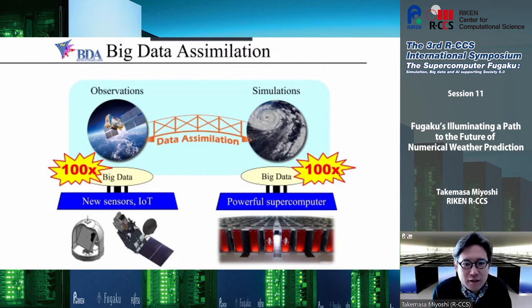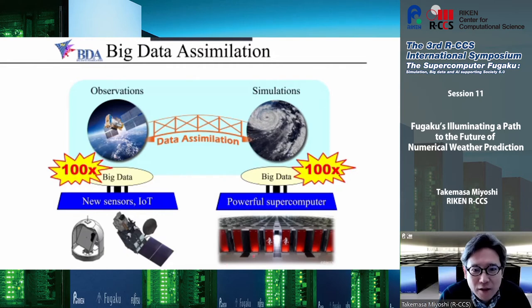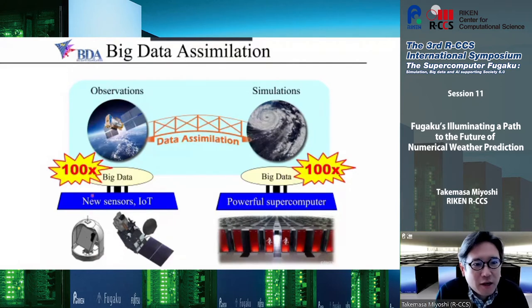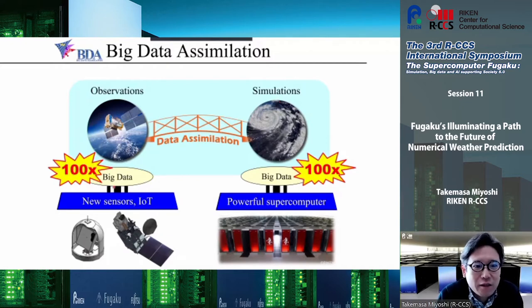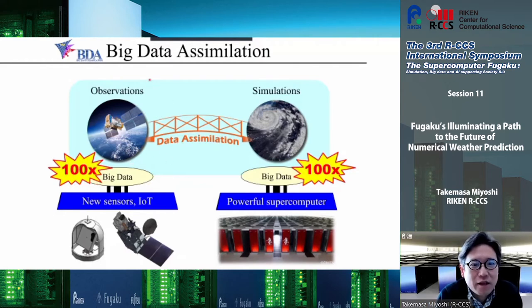To do that, when we started our research in 2013 we had a new supercomputer — the K supercomputer — and we also had new observing systems like a phased array radar, which produces a hundred times more data. We have a powerful supercomputer to process all of this data. Data assimilation is combining observations and simulations to make predictions, and because the data is a hundred times more, we call this new system big data assimilation.